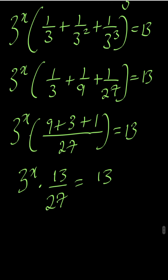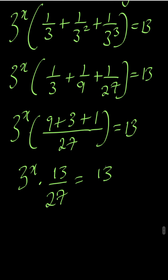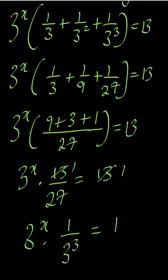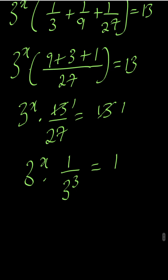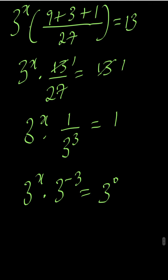You can cancel out 13 on both sides — 13 here becomes 1, 13 here becomes 1. So we have 3 to the power of x multiplied by 1 over 27, which is 3 to the power of 3, equal to 1. This gives us 3 to the power of x multiplied by 3 to the power of negative 3, equal to 3 to the power of 0, because anything to the power of 0 is 1.